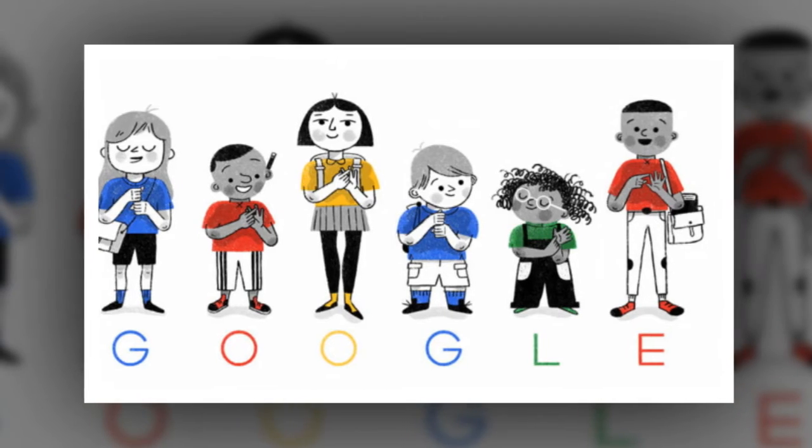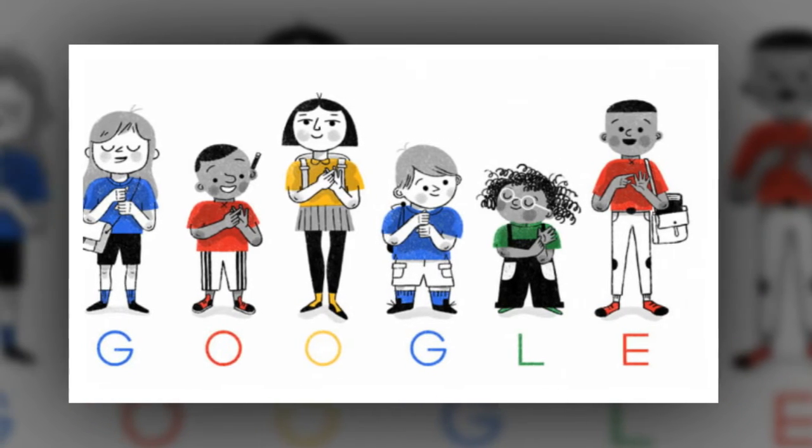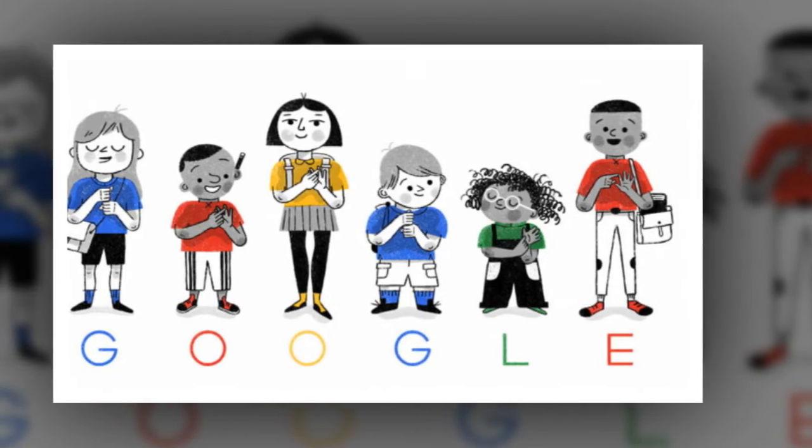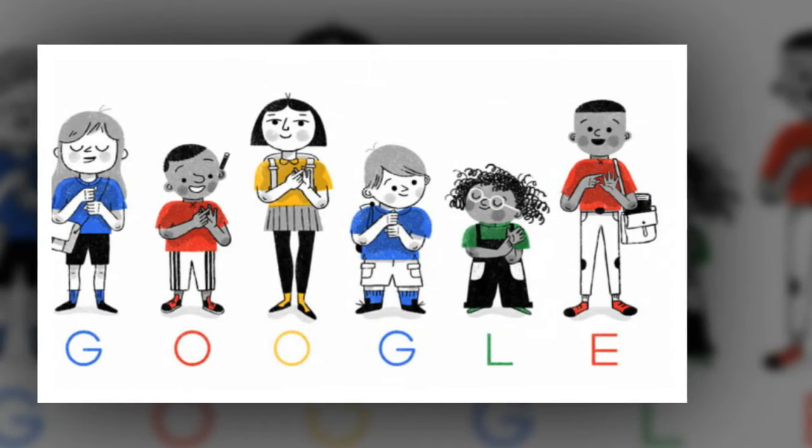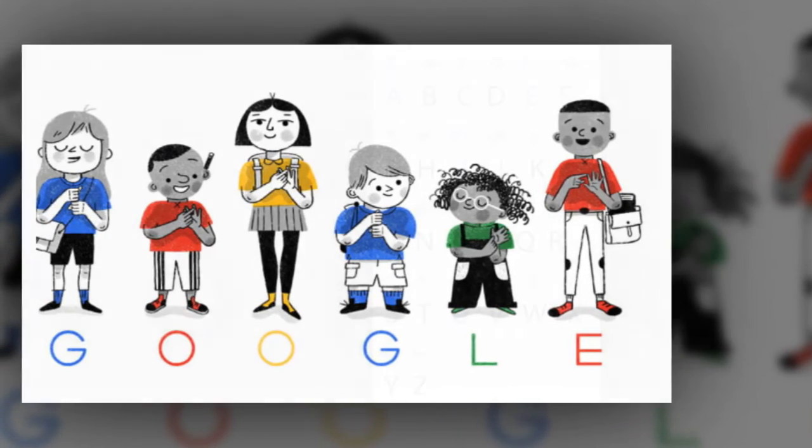A teacher from this academy, called Joseph Watson, later set up the London Asylum for the Deaf and Dumb in Bermondsey, which was the first public school for the deaf in the UK.